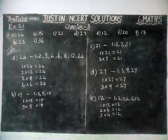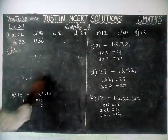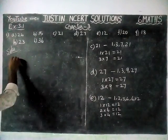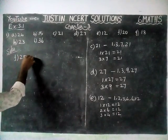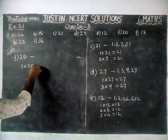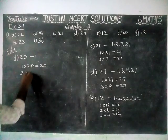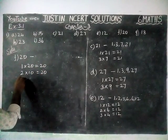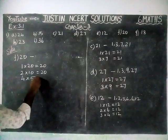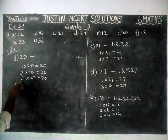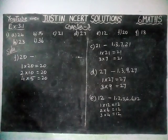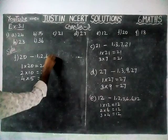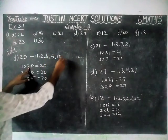Next, we are going to find factors of 20. 1 into 20, 2 into 10 is equal to 20. 3 will not come. 4 fives are 20. 6, 7, 8, 9 will not come, then 10 will come again. So factors of 20 are: 1, 2, 4, 5, 10, and 20.